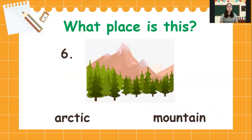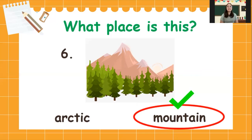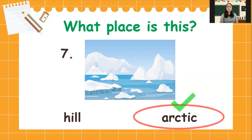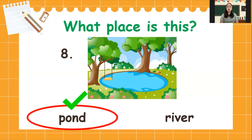Next, number six, what place is this? Is it arctic or mountain? The answer is mountain. Very good. Next, number seven, what place is this? Is it hill or arctic? The answer is arctic. Very good. Next, number eight, what place is this? Is it pond or river? The answer is pond. Very good.